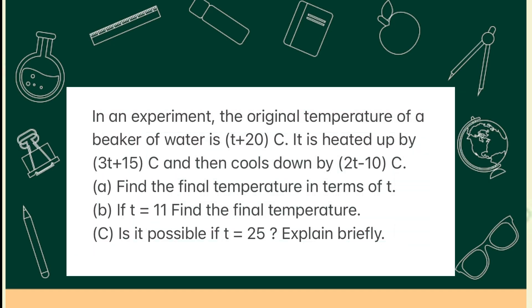It's said in an experiment, the original temperature of a beaker of water is T plus 20 degrees Celsius. Then, it is heated up by 3T plus 15 degrees Celsius. And then, it goes down by 2T minus 10 degrees Celsius.